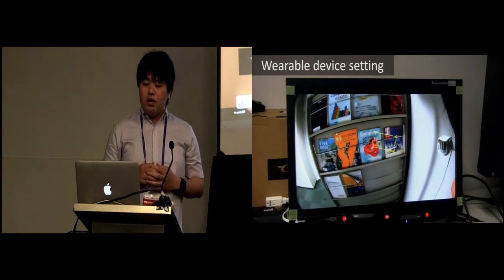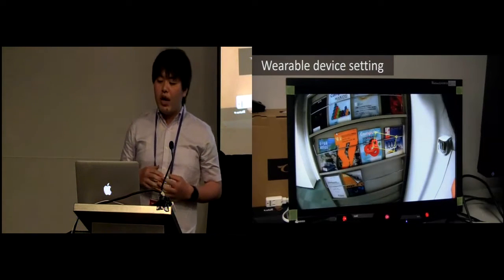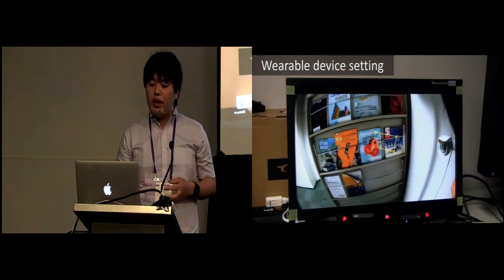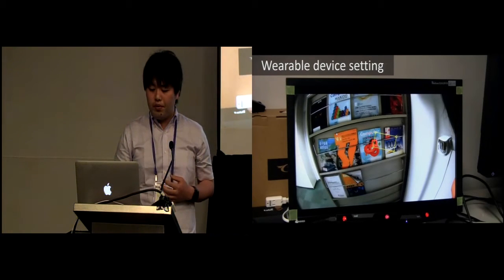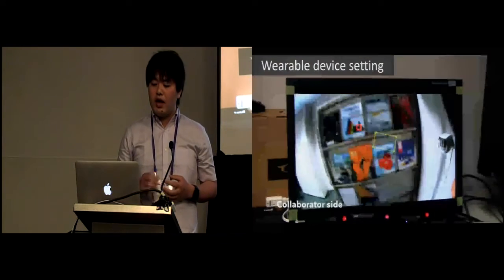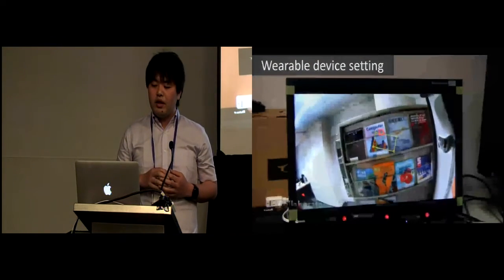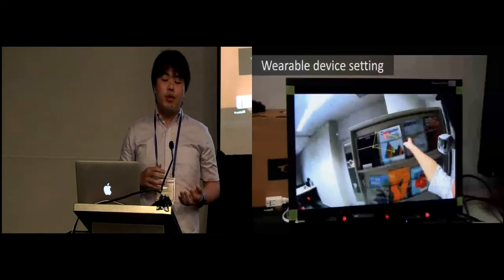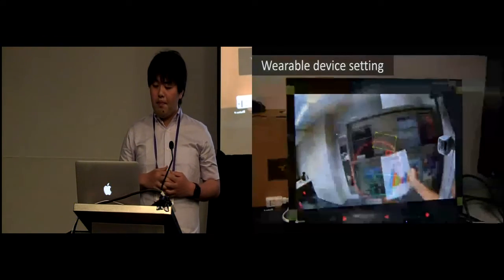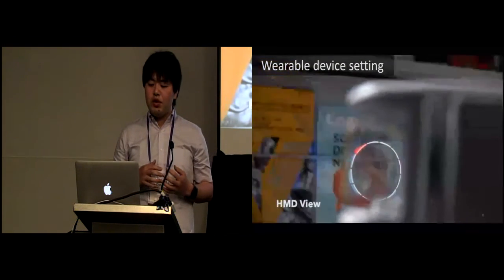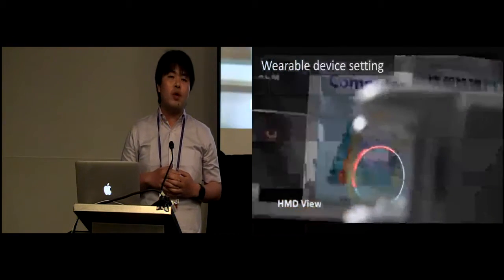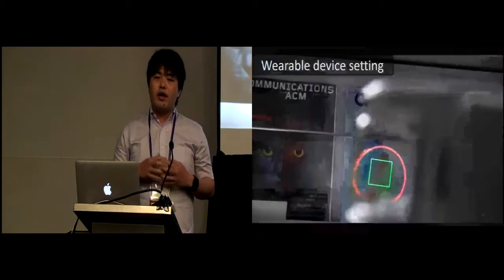This video shows the wearable device setting. The collaborator can see the view of the workspace from the worker's point of view. The collaborator looks at a target object in the worker's view, and the collaborator's eye position is shown to the worker by the HMD.